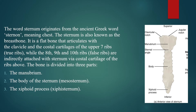The word 'sternum' originates from the ancient Greek word 'sternon,' which means chest. The sternum is also known as the breast bone. It is a flat bone — your sternum falls under the category of flat bones, similar to the scapula.